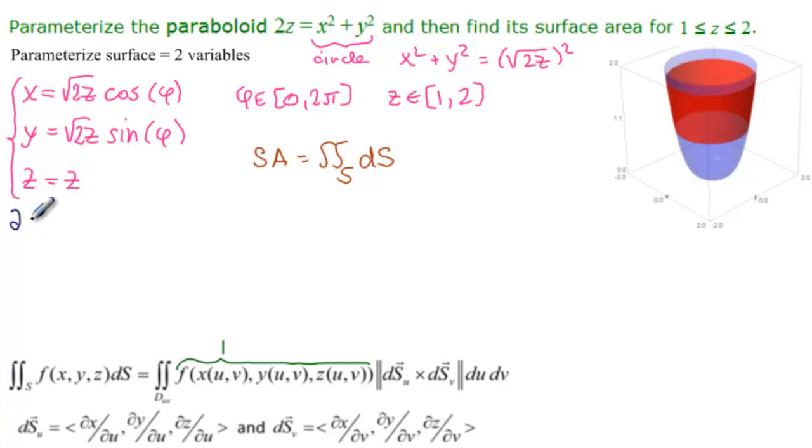So delta x we have, delta phi. So z is a constant. So the square root of 2z. And then the derivative of cosine is minus sine of phi.